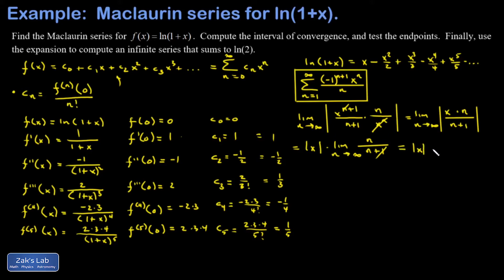This series converges provided that the ratio test limit comes out to something less than 1. In other words, it converges on negative 1 to 1. But we still have to test the endpoints to see if the series converges there.